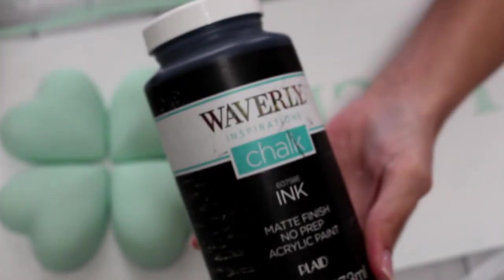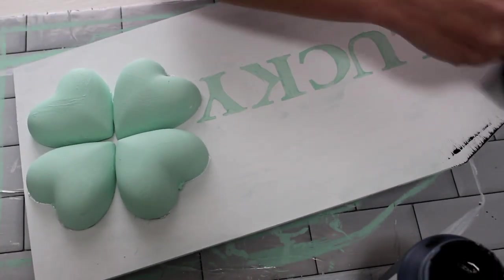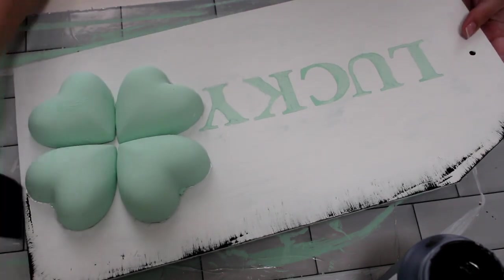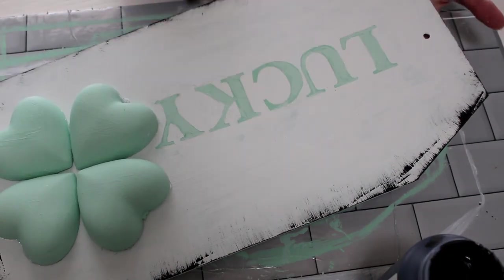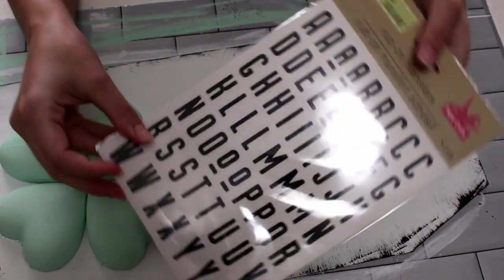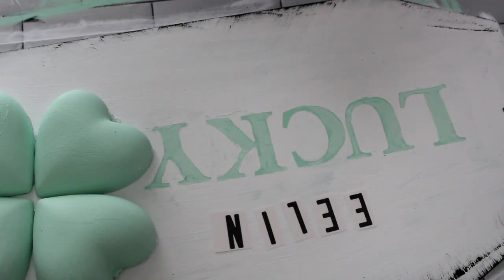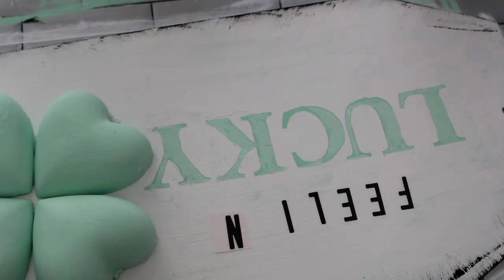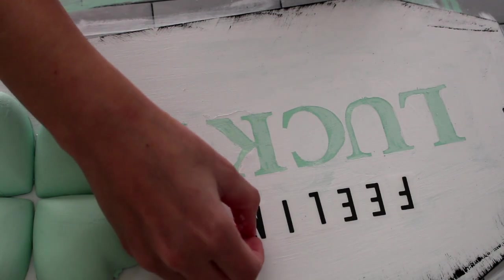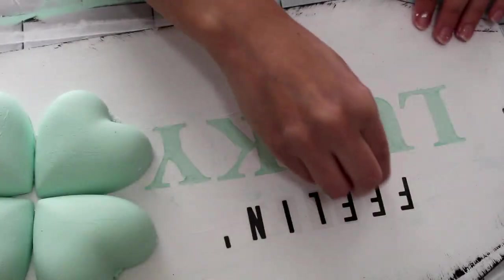Then I went in with this Waverly chalk paint and ink and I kind of tried to give my sign a more distressed look. All I did is take a sponge brush, dabbed it into the ink paint, and I dry brushed it on. Next, I'm going to take this Rub-On Transfer Letters. I absolutely love these guys. If you find them, grab them. They're amazing, especially if you don't have a Cricut. However, I do suggest once you put the letters on, I do suggest going over with some Mod Podge so that way the letters themselves won't peel off in the future.